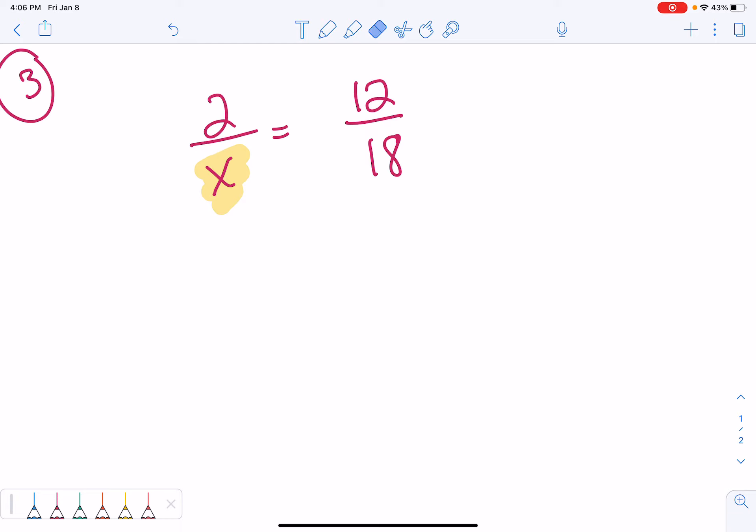We do not like the fact that we are dividing by our variable. So, to undo this division by x, we will multiply by x on both sides, of course. Now, remember, x divided by x, it's the same number divided by itself. So, that equals 1. So, these two cancel, and we're left with 2 equals 12x over 18 times 1 is 18.